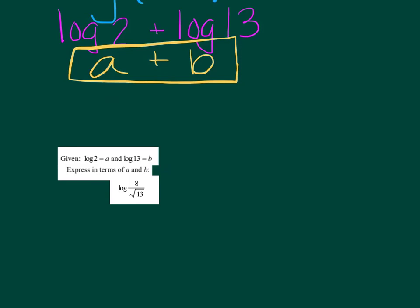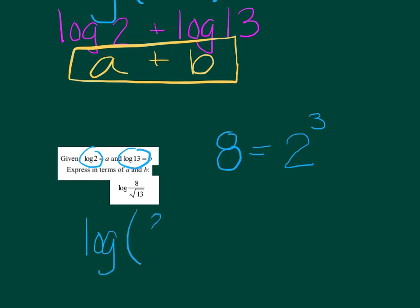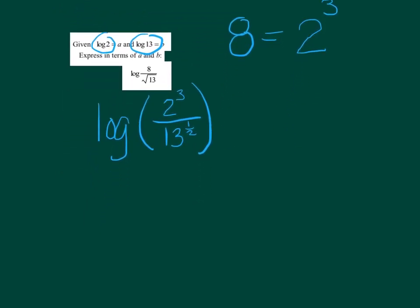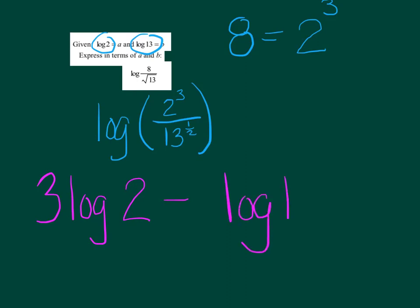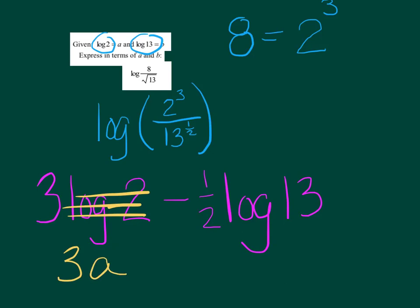Same numbers — log 2 equals a and log 13 equals b — rewrite log of 8 over radical 13. Rewrite 8 as 2 cubed. The radical 13 is 13 to the 1/2 power — roots go on the bottom. So I have log of 2 cubed over 13 to the 1/2. Applying log properties: log of 2 cubed, with the cubed coming in front, minus log of 13 to the 1/2, with the 1/2 coming in front. Replacing log 2 with a and log 13 with b: 3a minus 1/2 b is the final answer.